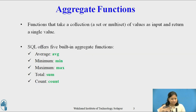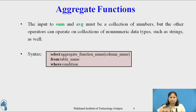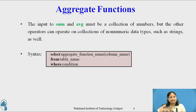Aggregate Functions are the functions that take a collection of values as input and return a single value. SQL offers 5 built-in aggregate functions: Average, Minimum, Maximum, Total, and Count. The input to Sum and Average must be a collection of numbers, but other operators can operate on collections of non-numeric data types such as strings. The syntax is: SELECT aggregate_function(column_name) FROM table_name WHERE condition.